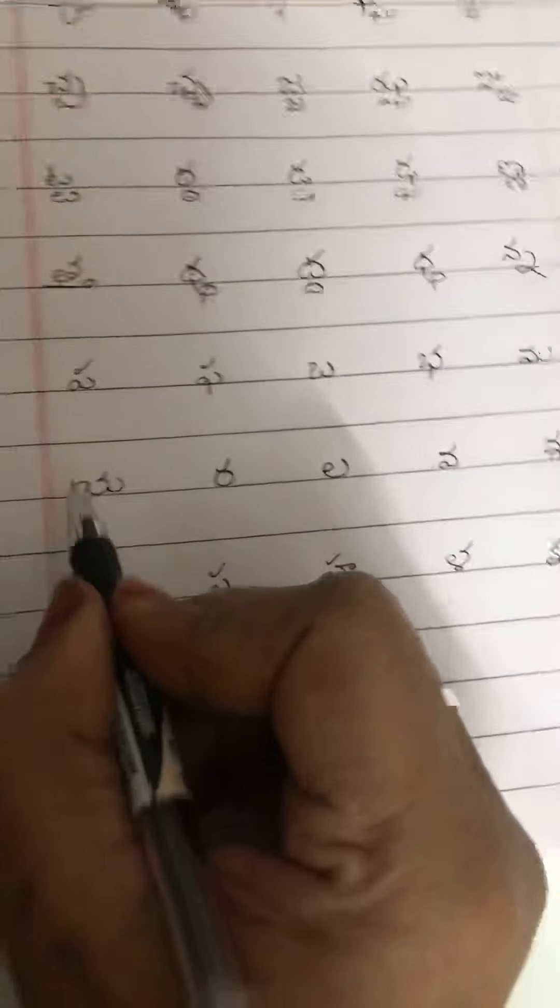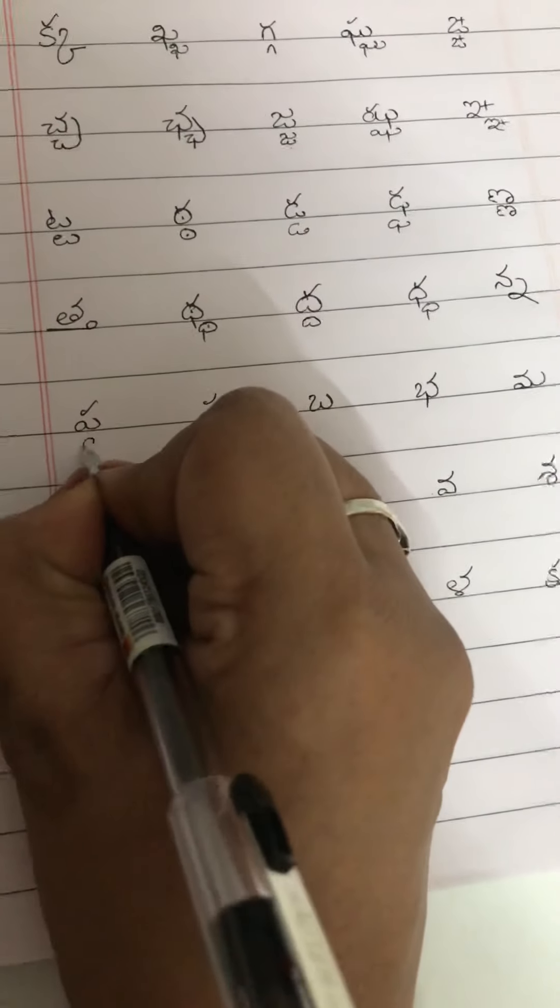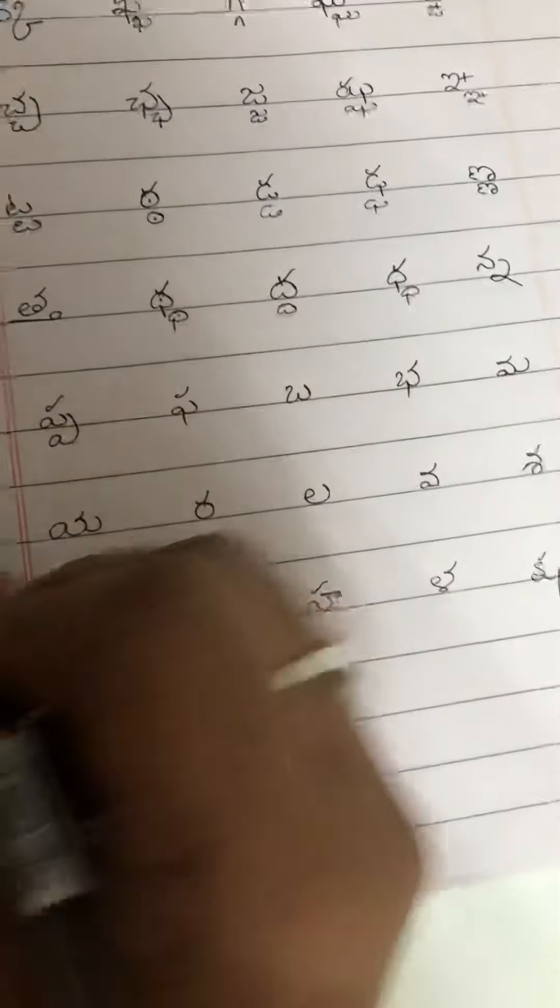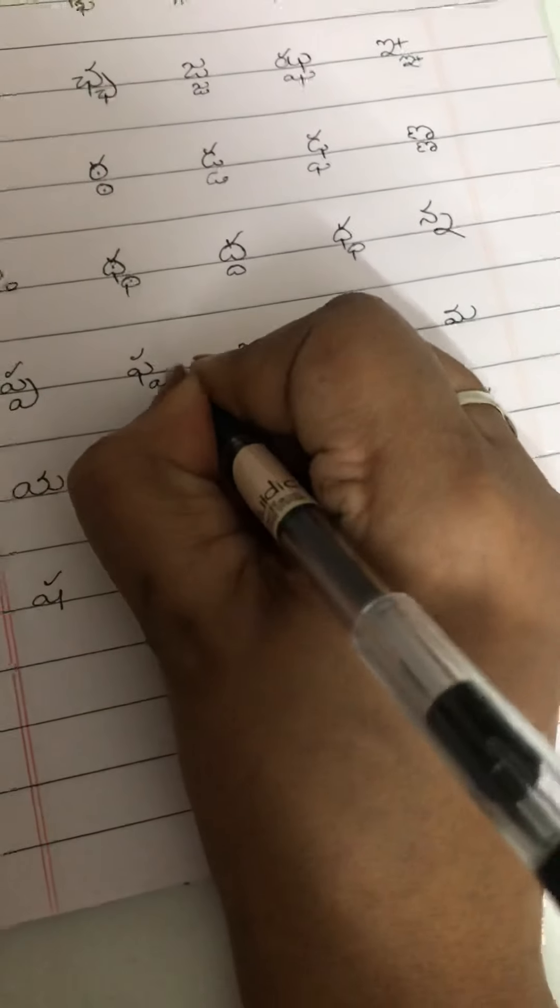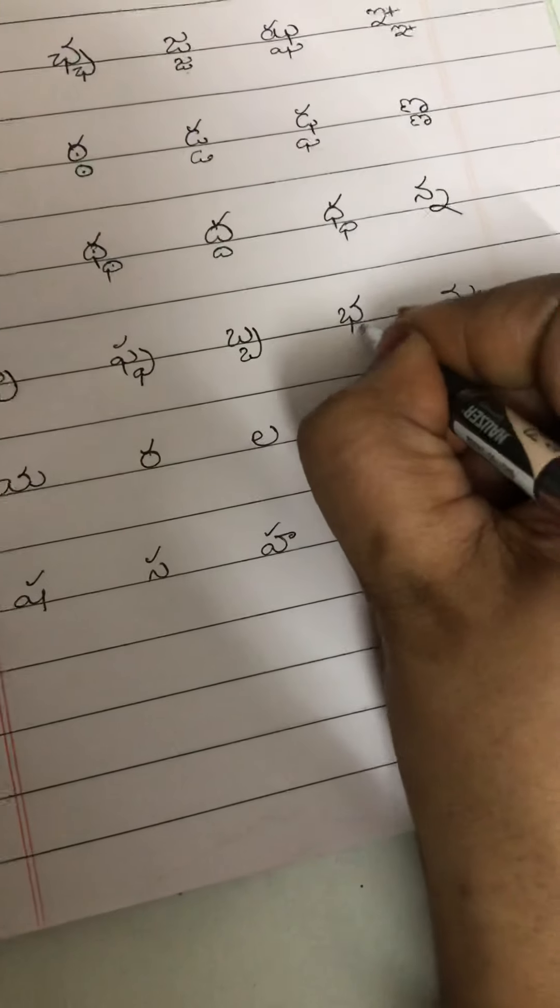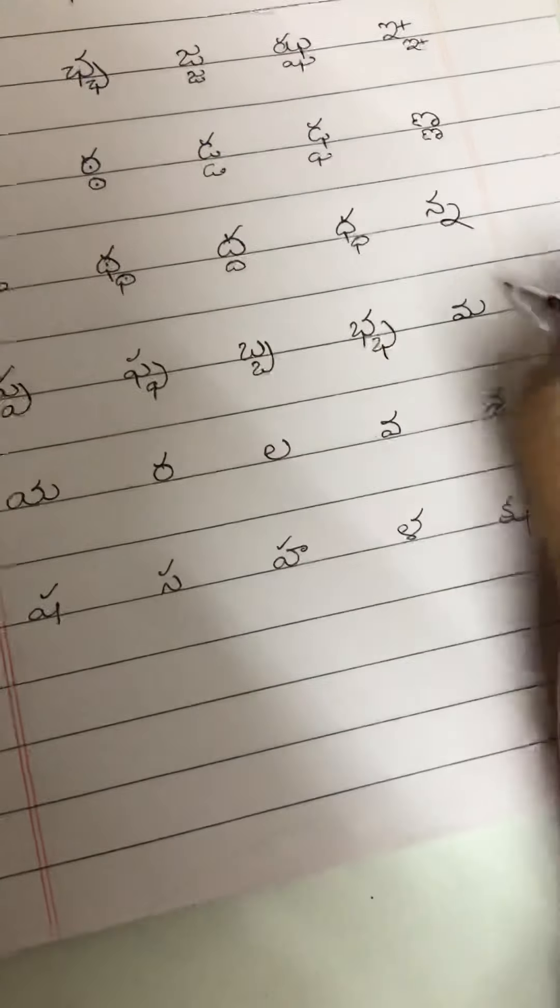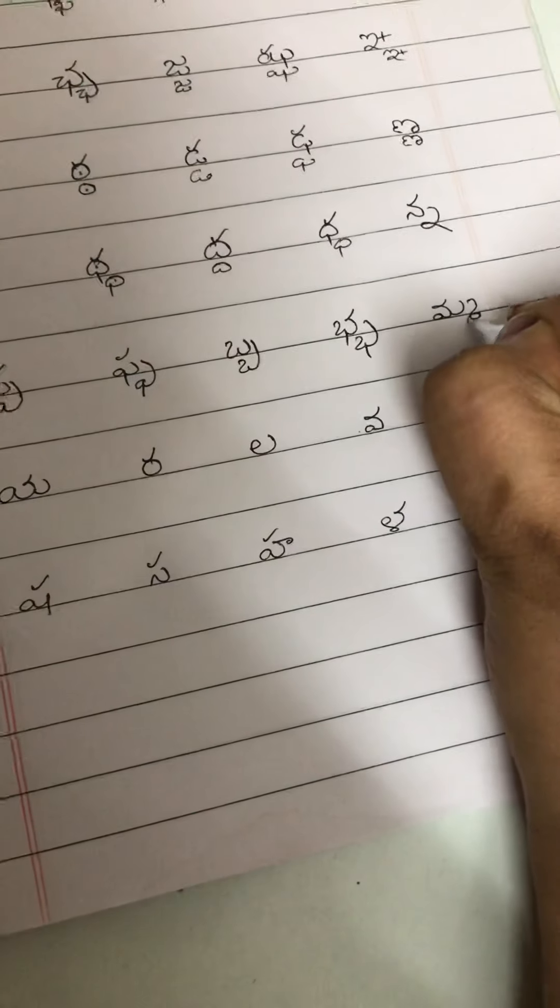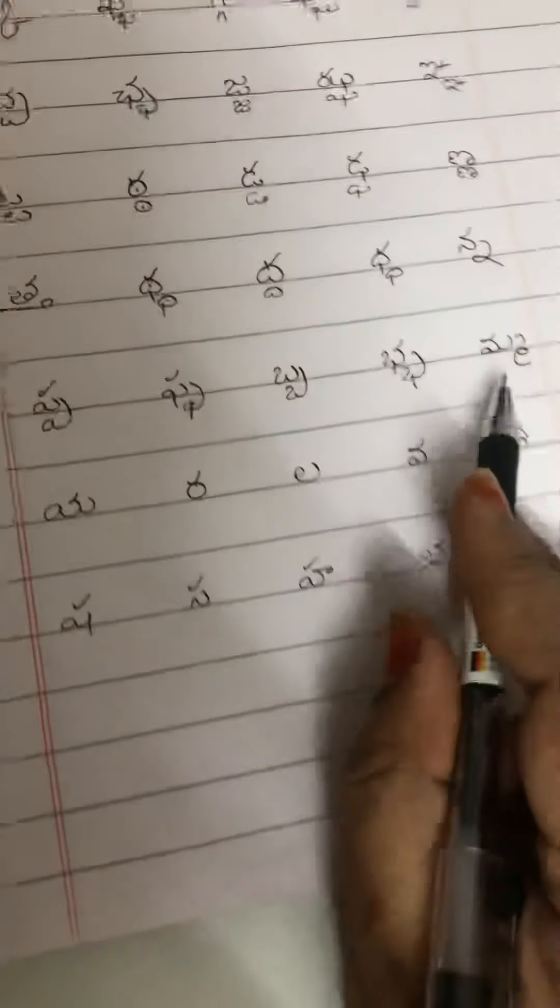Now, let us come to the next line which is pa. Pa ki paavattu will go next to the letter like this. Pa also like this. Ba, ba. Ma again next to the letter, not below the letter, next to the letter.